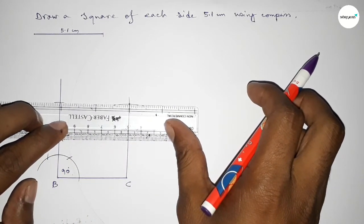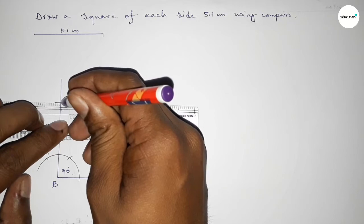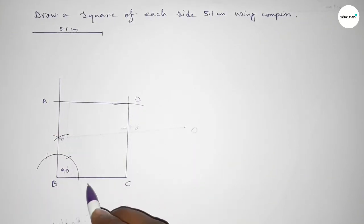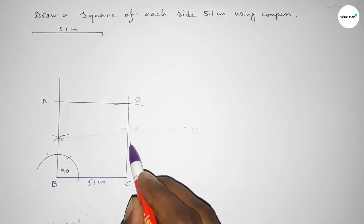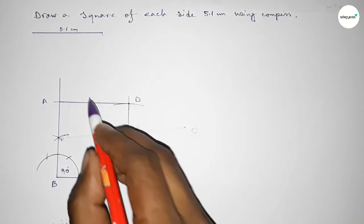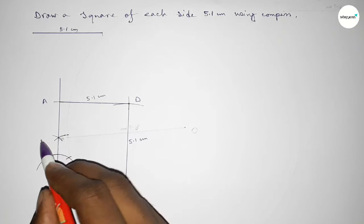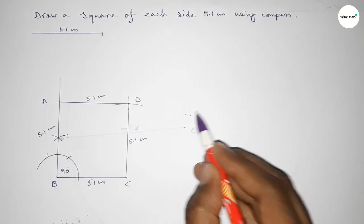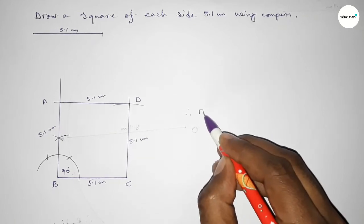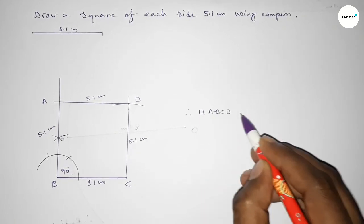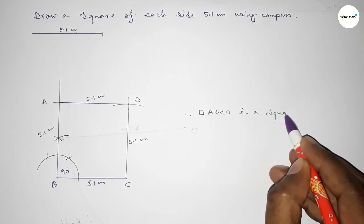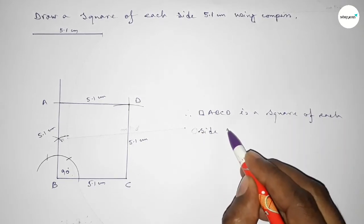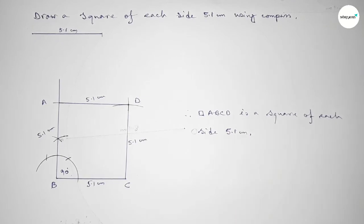Joining this side, then joining this side to complete the square. Taking here point A and here point D. Each side — AB, BC, CD, and DA — is 5.1 centimeters. Therefore ABCD is a square of each side 5.1 centimeters.